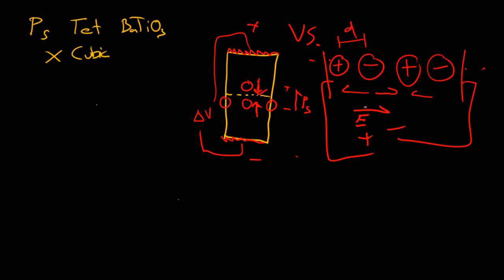So what happens when the electric field goes this way is that the negative atoms want to go that way, and the positive atoms want to go the other way. So basically, the motion is canceled.